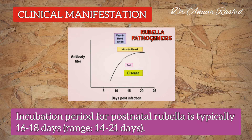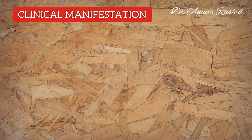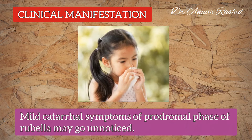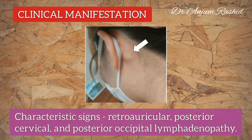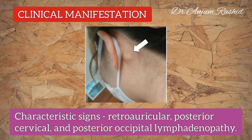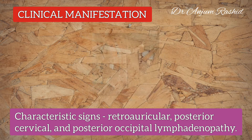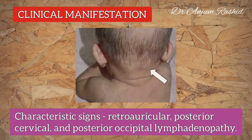The incubation period for postnatal rubella is typically 16 to 18 days. The mild catarrhal symptoms of the prodromal phase may go unnoticed. Characteristic signs of rubella are retroauricular, posterior cervical, and posterior occipital lymphadenopathy.